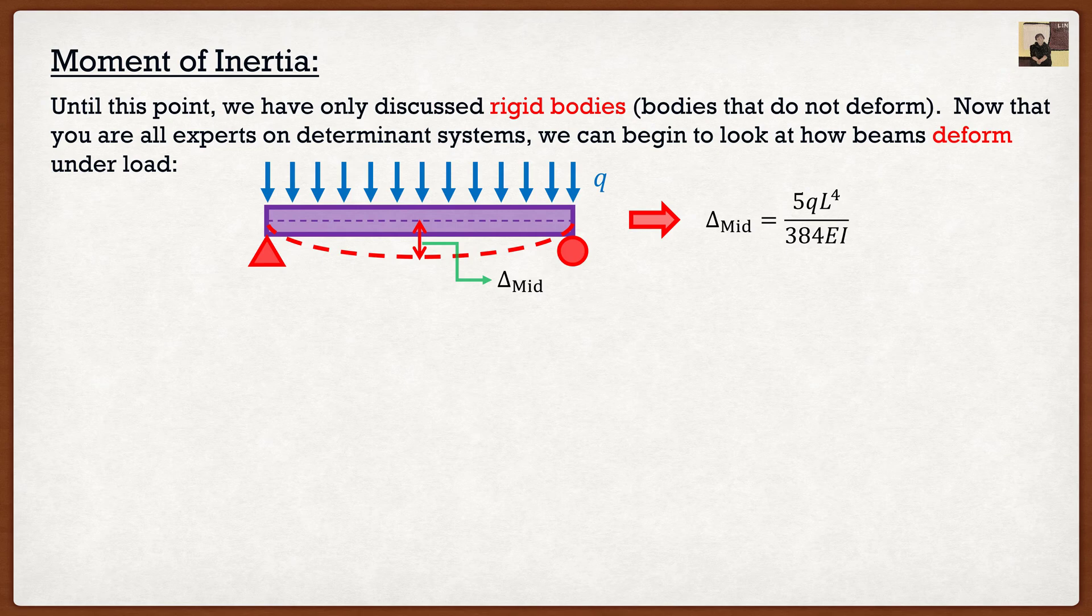So if we were to look at this formula right here, you guys know everything in it, besides two things, and that is going to be that EI term. So as we see, the bending of beams is a function of E, as well as I.